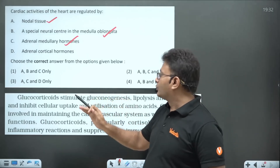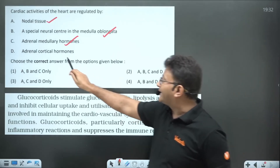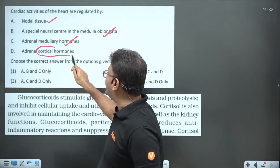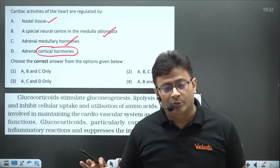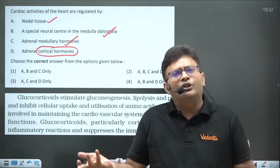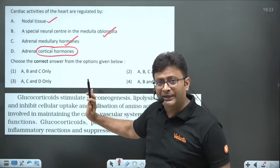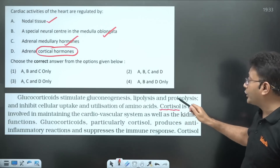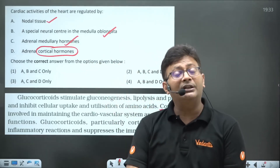In the hormone chapter, glucocorticoids stimulating gluconeogenesis is mentioned, and adrenal cortical hormones are referenced — but which cortical hormone is not specified. There are glucocorticoids, mineralocorticoids, and sex corticoids. The confusion comes from cortisol, because cortisol is undoubtedly part of cortical hormones.